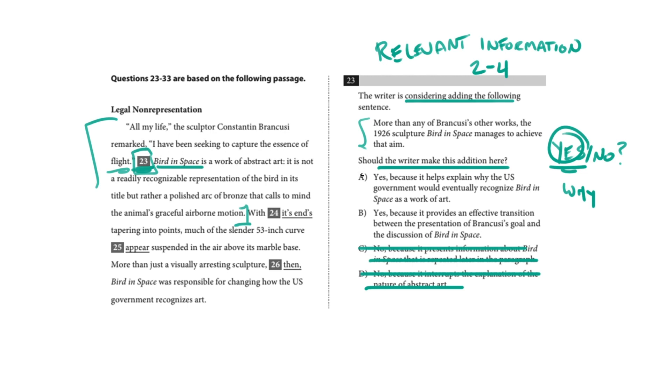So, choice A, yes, because it helps explain why the U.S. government would eventually recognize Bird in Space as a work of art. Now, we don't have the context for that, but that is what this passage is about. You can see at the very end of this paragraph, which is just part of a longer passage that I've excerpted. It says, more than just a visually arresting sculpture, then Bird in Space was responsible for changing how the U.S. government recognizes art.